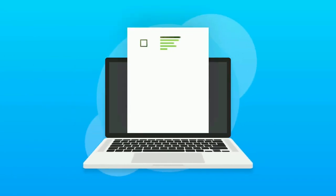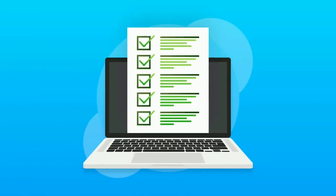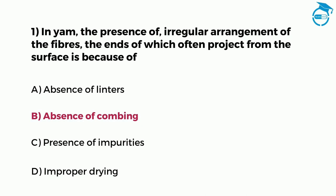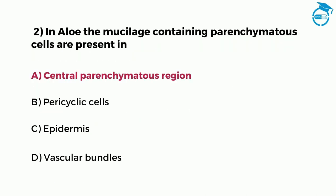Here is the process. This test consists of 10 questions and you will get 7 seconds to write your answer in the comments. For example, if the answer to question 1 is option B, you can write it in the comments as 1B. Similarly, if the answer to question 2 is option A, you can write it in the comments as 2A.